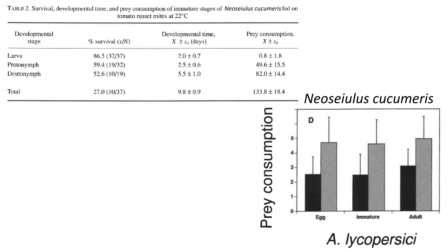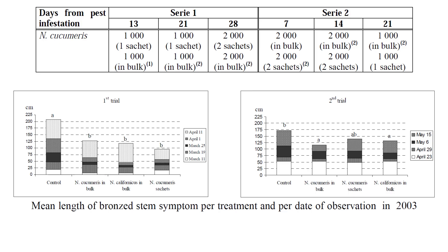Moving on, in a 1997 report by Broder, Neoseiulus cucumeris was found to take 9.8 days to develop, and while that population consumed the most prey and one-fourth of the females tested mated, none of them were able to reproduce on tomato russet mites. Neoseiulus cucumeris was also found to be unsuccessful at controlling tomato russet mites in a 2003 report by Trott and Cottle, wherein repeat applications over the span of several weeks under experimental greenhouse conditions merely slowed prey development on Solanum lycopersicum palmyro cultivar tomatoes.